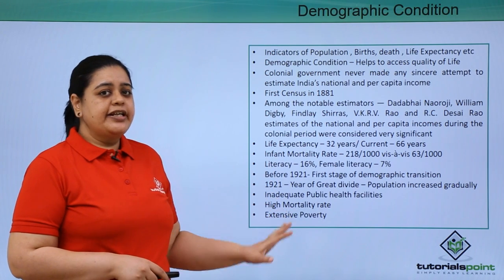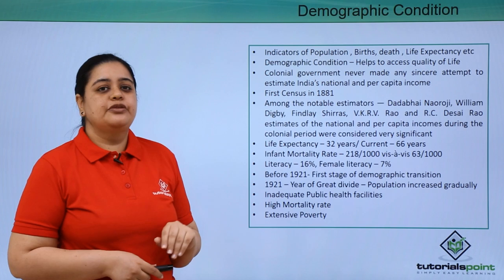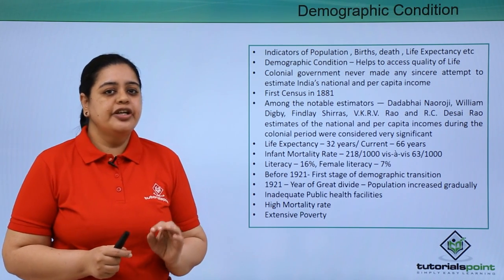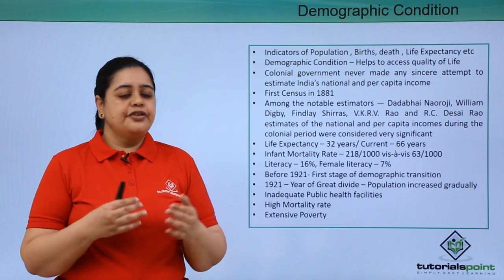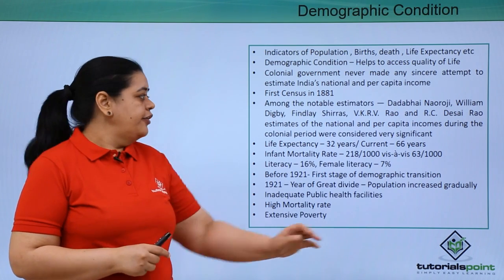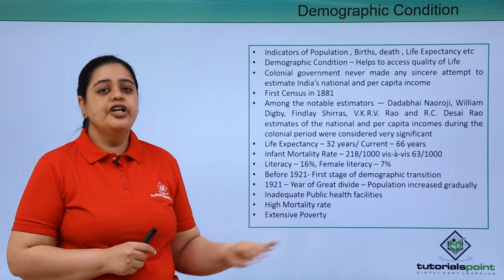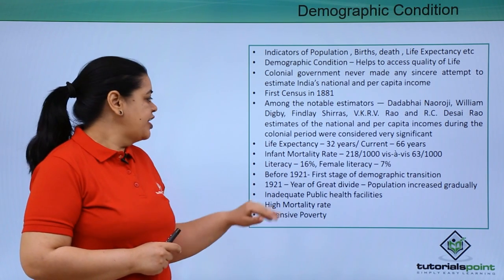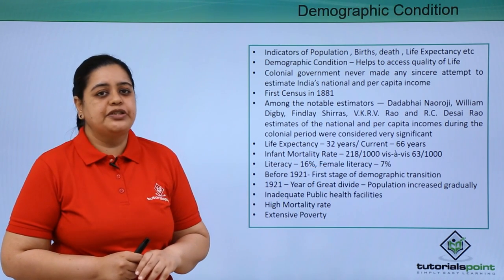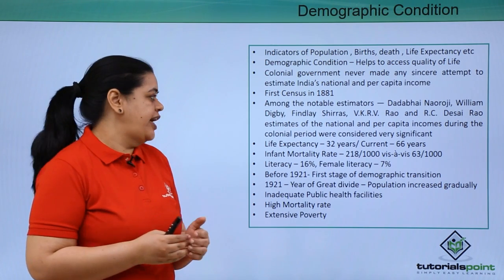When they estimated the demographic condition, they came to a conclusion that the life expectancy in India at that time was 32 years — a person used to die by the time he reached his 32nd birthday. The current life expectancy is 66 years. The infant mortality rate was 218 per 1000, meaning of every 1000 children born, 218 used to die. Now that ratio is only 63 per 1000.